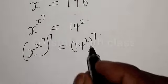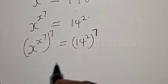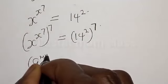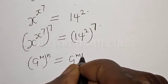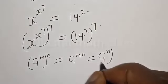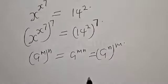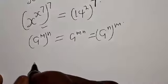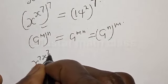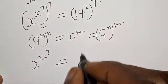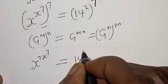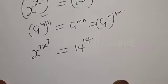Remember, if we have a raised to power m, raised to power n, that is the same as a raised to power m×n. Applying this rule, our equation becomes: s raised to power 7·s raised to power 7, is equal to 14 raised to power 7 times 2, which is 14 raised to power 14.